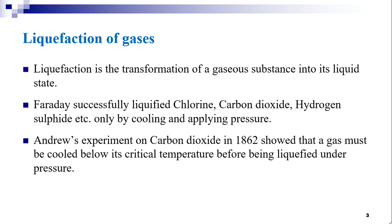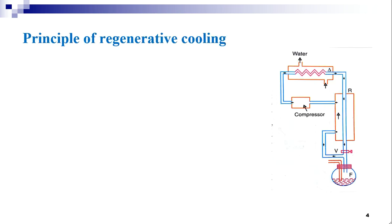In the previous session we learnt what critical temperature is. Real success was obtained when the Joule-Thompson effect is coupled with regenerative cooling. From the Joule-Thompson experiment, when a gas below its temperature of inversion is subjected to a throttling process, its temperature decreases. But the fall in temperature is very small to produce liquefaction of the gas all by itself.